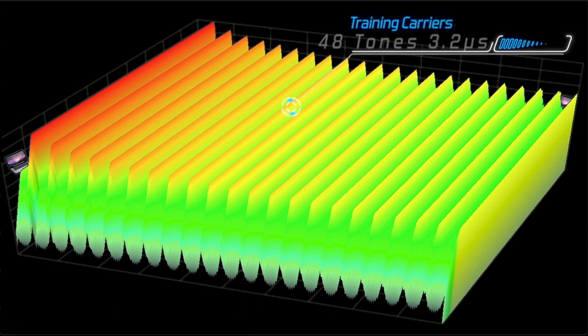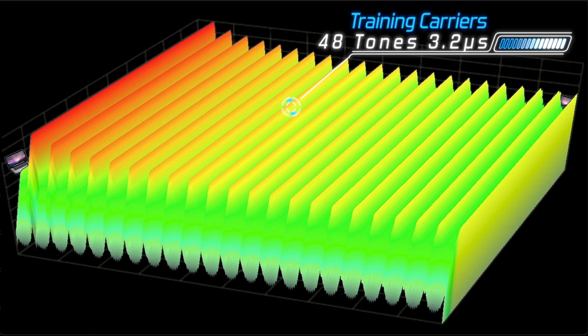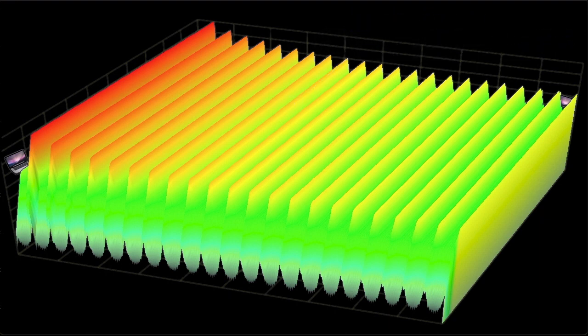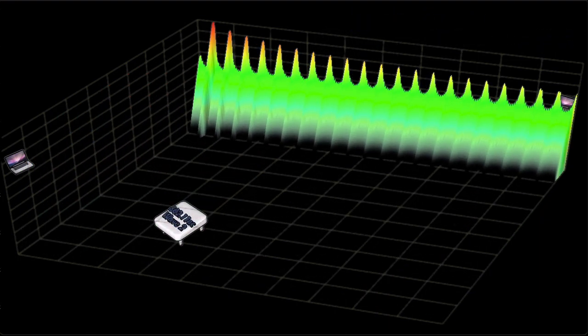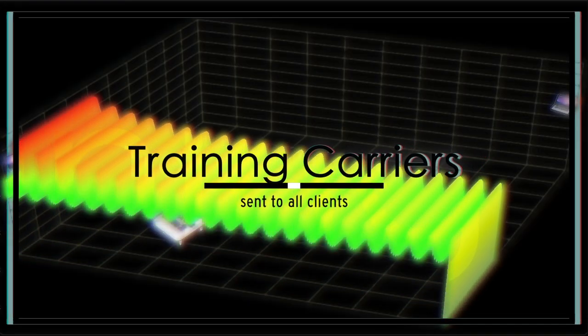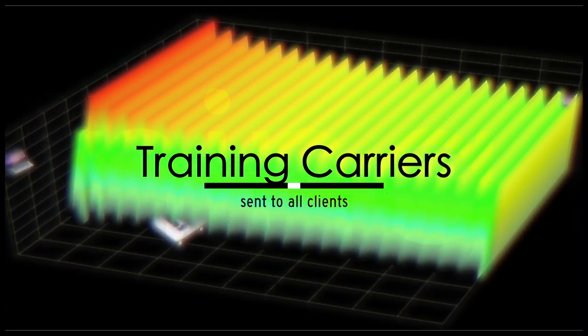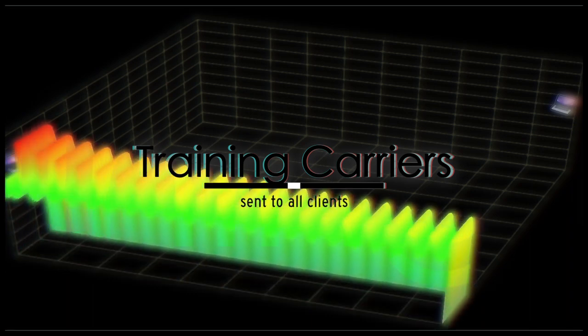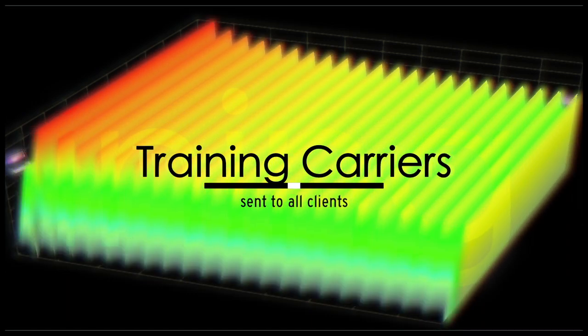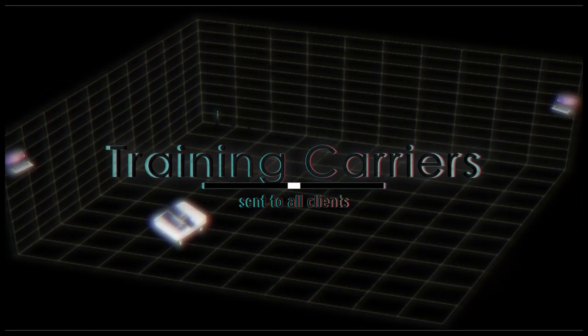From the transmission view, that's from the access point, each carrier wave is clean without distortion. What will be received by the client will be very different. We saw earlier the effect of multi-path interference on an indoor RF transmission. This simulation illustrates the RF changes to the training carriers from the perspective of each client.